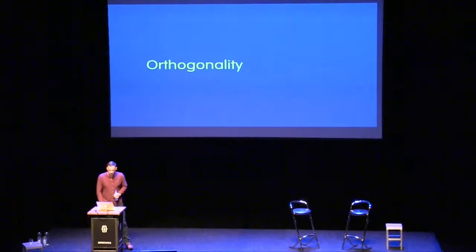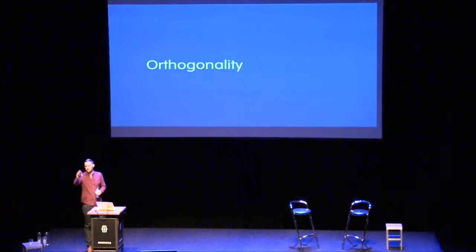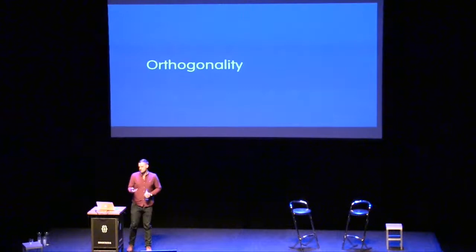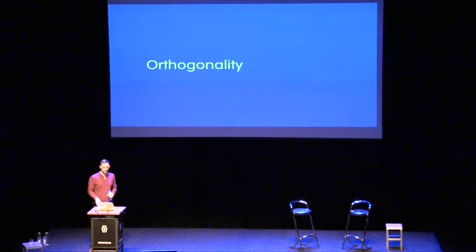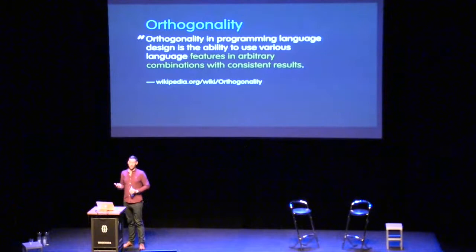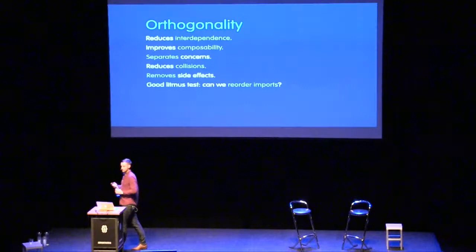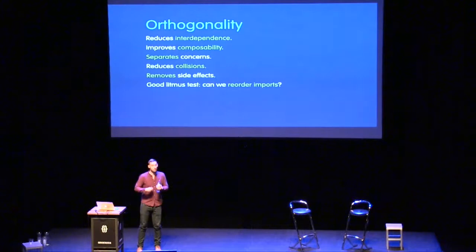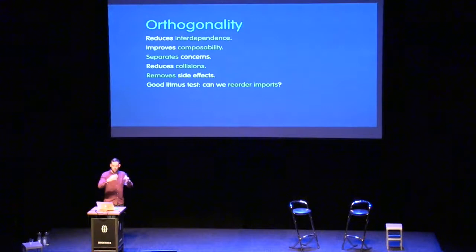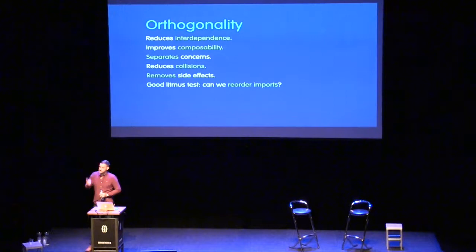The final principle we're going to look at is orthogonality. Orthogonality in programming is the ability to use various language features in arbitrary combinations with consistent results — can we use bits of a language in a random order and still get consistent, expected output? If yes, we've got an orthogonal system. It reduces interdependence, means things don't rely on each other as much, we can compose things quickly and confidently, it separates concerns, and reduces collisions.